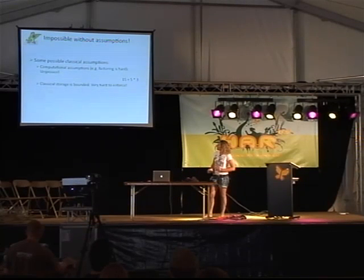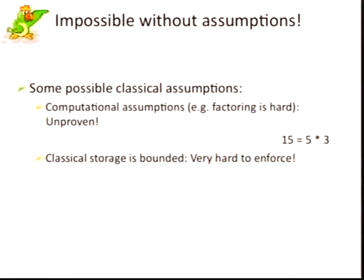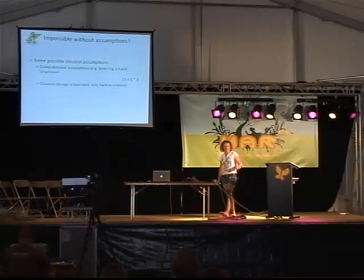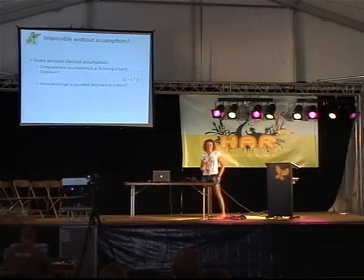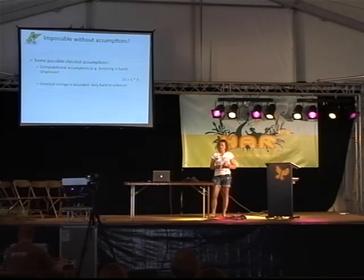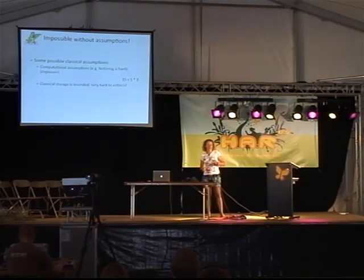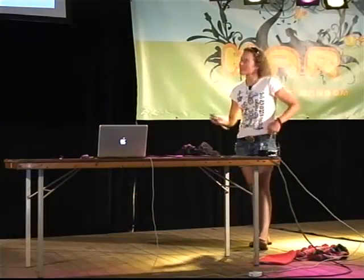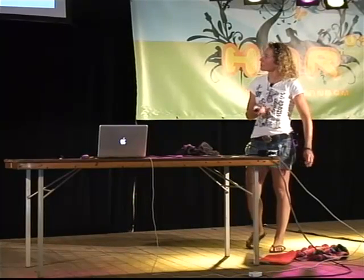Unfortunately, it's impossible to do this if Alice and Bob only have classical or even quantum communication with no other resources. But it does become possible under some classical assumptions — for example, that factoring is difficult. Factoring: I have a number, usually larger than 15, and I want to know what its prime factors are. As Vadim mentioned yesterday, this can be done efficiently on a quantum computer. And in fact, it's not even known classically whether this assumption is really correct — and as you just saw from Job, there are many other attacks on smart cards that go far beyond this.